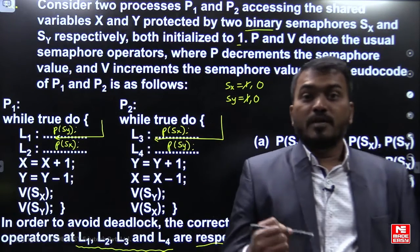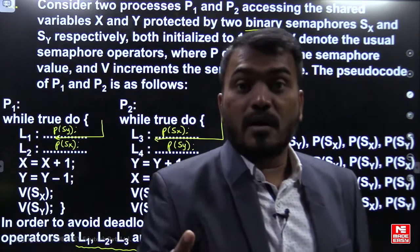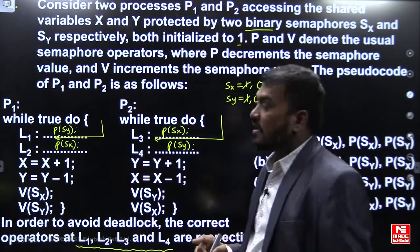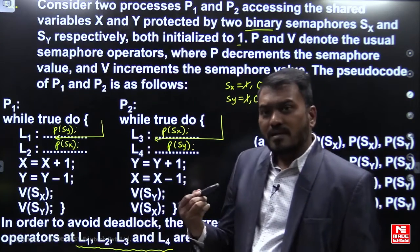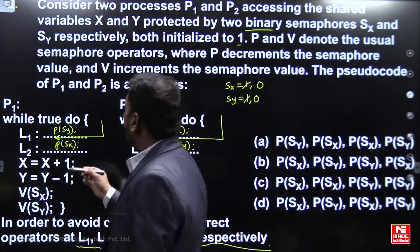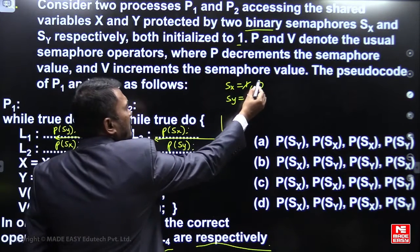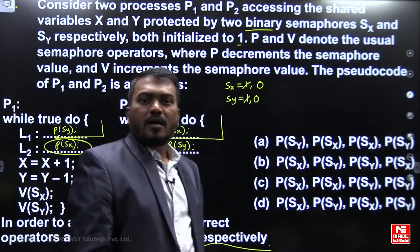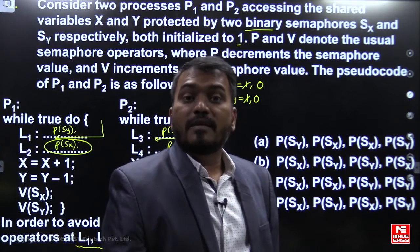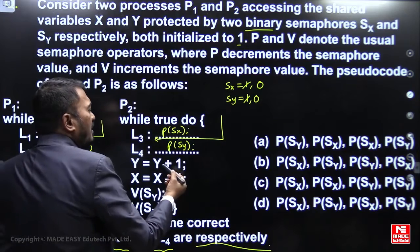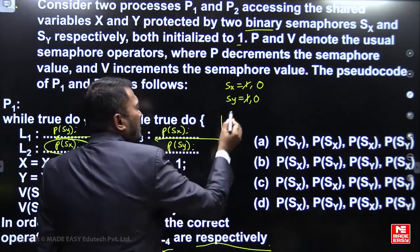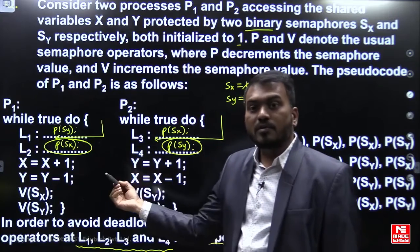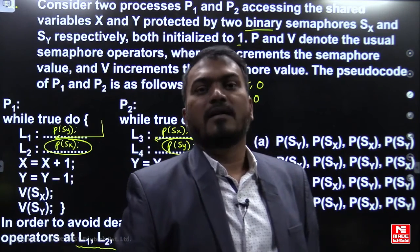Remember: preemption is just a temporary stop — the process will come back and continue the remaining execution. When P1 comes back, it tries to perform down(SX), but SX is already 0. On 0, performing a down operation causes suspension. When P2 comes back and tries down(SY), SY is already 0, so P2 is also suspended. Both P1 and P2 are suspended, leading to deadlock.